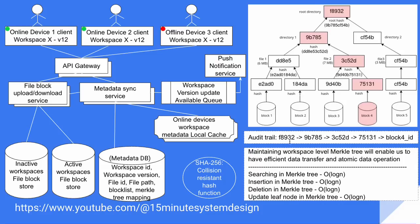Maintaining a workspace-level Merkle tree allows us to have efficient data transfer and also guarantees atomic data operations. Rather than having a hash for the entire file, we divide each file under sub-directories into some blocks. These blocks may grow and shrink independently. If block four has been changed, we need not send the entire file — we can just send block four and its particular audit trail. The audit trail is a hash chain from the root hash to that particular block four's path.